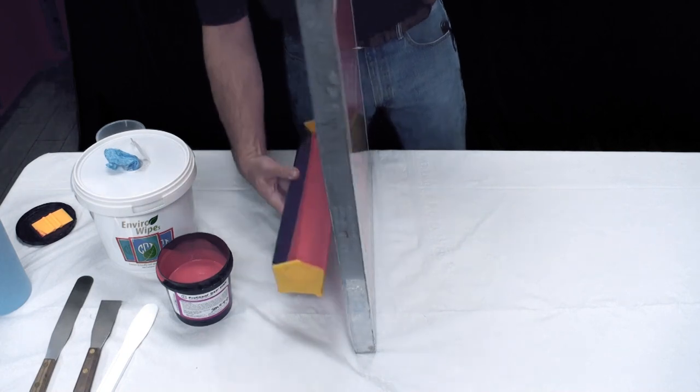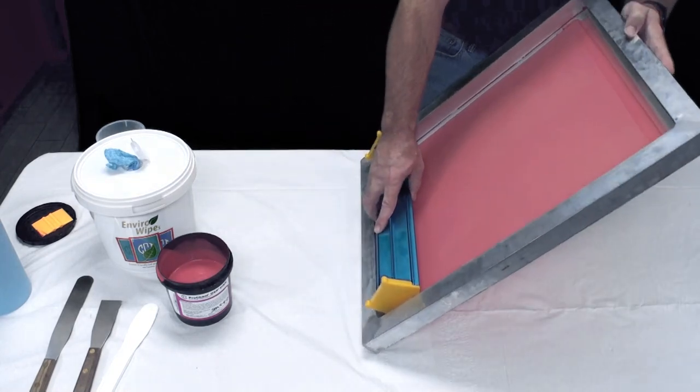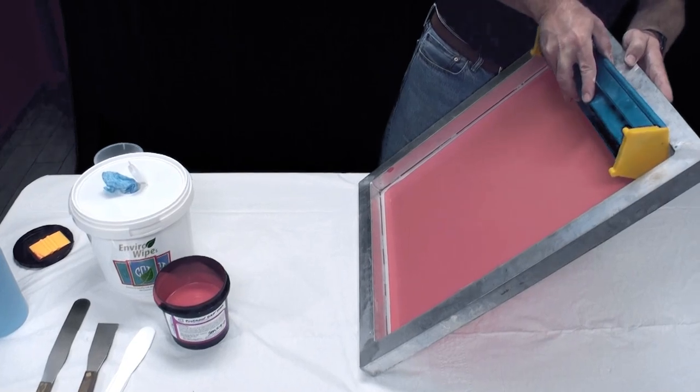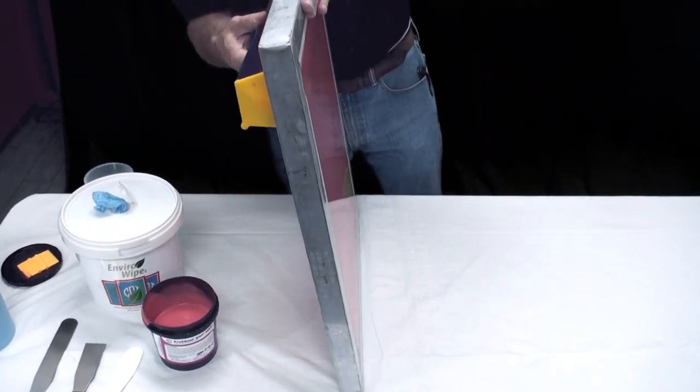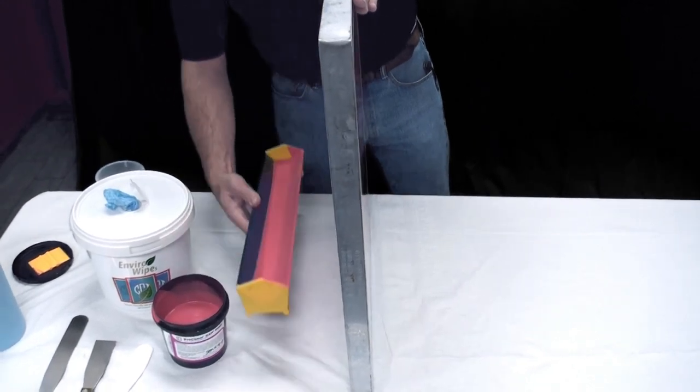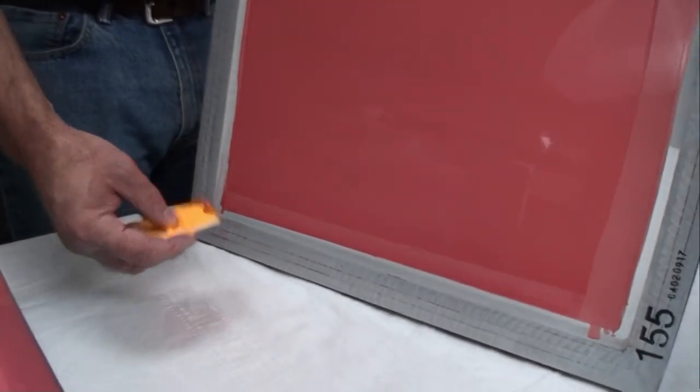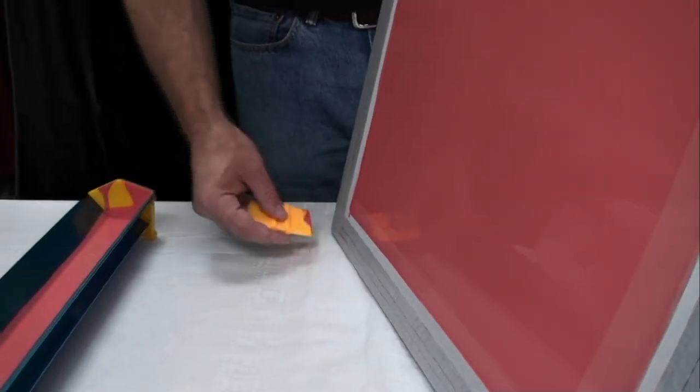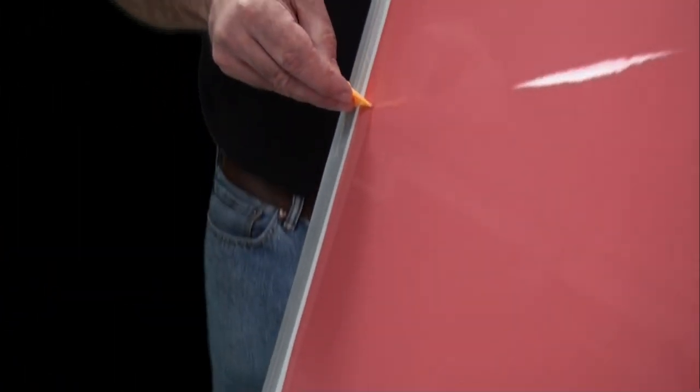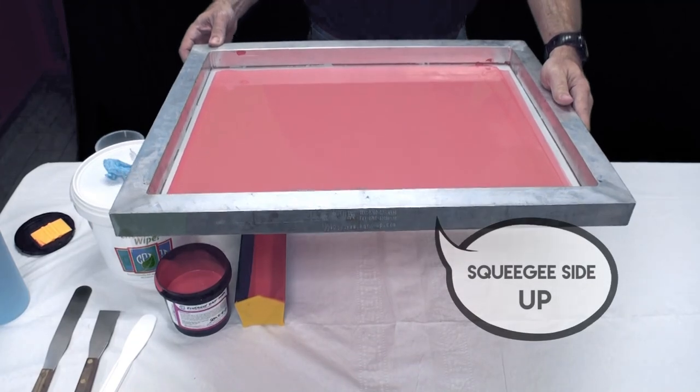Again scrape it at the top. I like to take a scraper card and scrape off any heavy deposits. So come back scrape. You want to dry it like this squeegee side up.